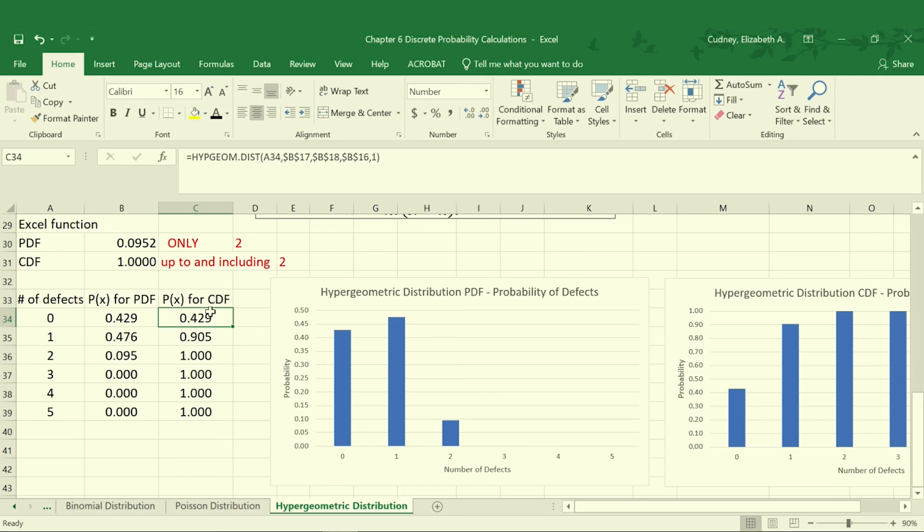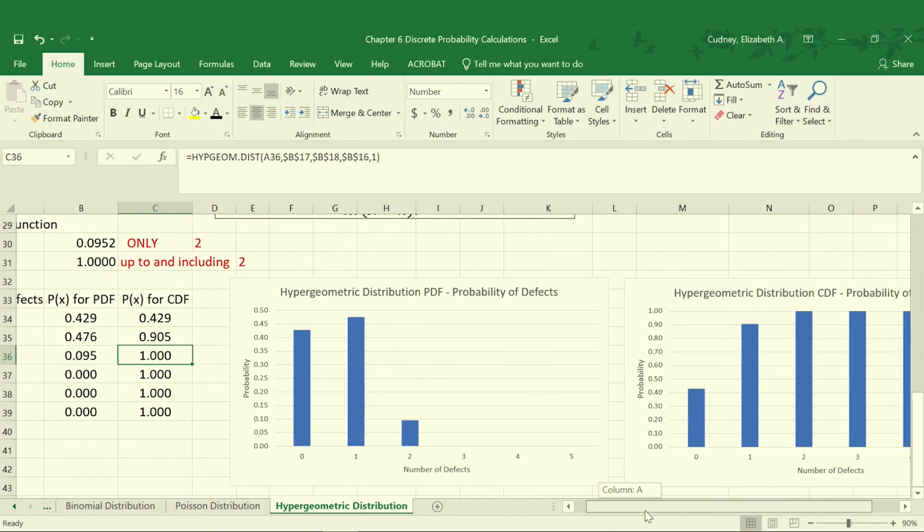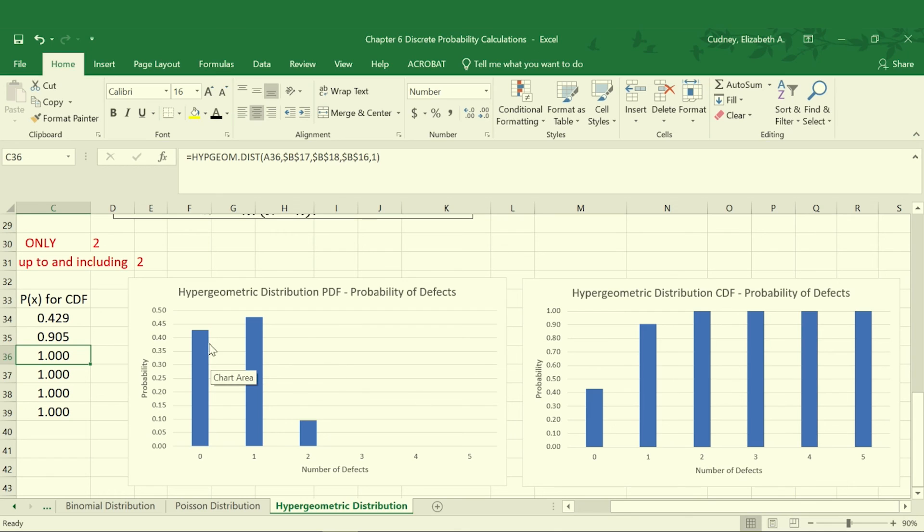With the CDF, it's cumulative, so we're adding those together. That's why when we get to probability of 2 defects, we get up to 100%. So graphically, we would expect 0 or 1, there's a high probability we'll have 0 or 1 defect out of those 5, and when we get to 2, we would expect then that would cover 100% of our sample would have either 0, 1, or 2 defects. If I was pulling 5 at random, any combination, I would expect 0, 1, or 2 defects.